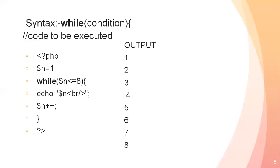But in while, the initialization is done separately: $n equals 1, and the condition $n less than or equal to 8 is in the while header. Inside the curly braces I print $n with a br tag and then $n++. When executed, the output is 1, 2, 3, 4, 5, 6, 7, 8.